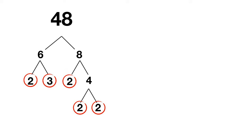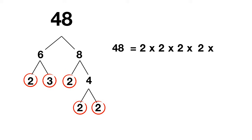We can write that 48 is equal to 2 times 2 times 2 times 2 times 3. Notice that I wrote my prime factors in order from smallest to biggest, just to stay organized.